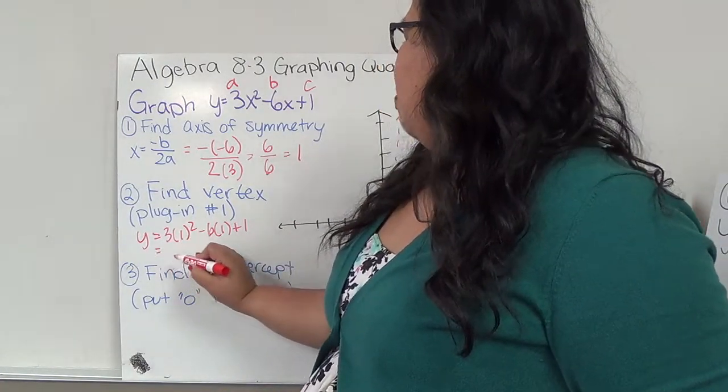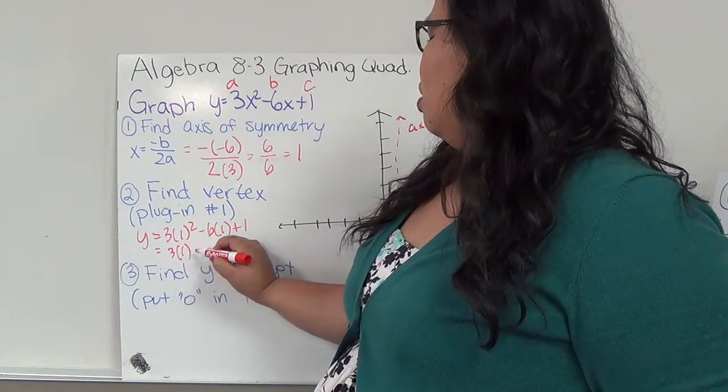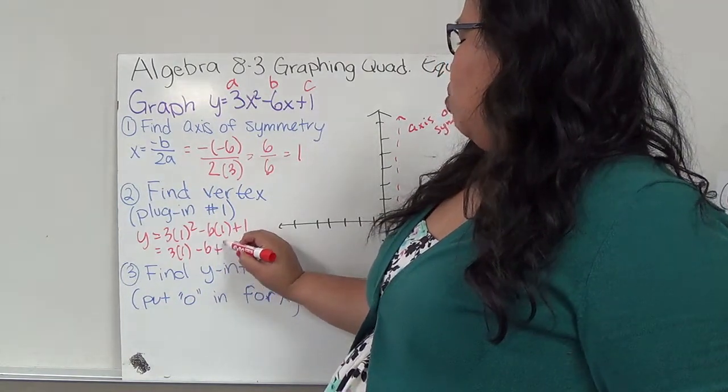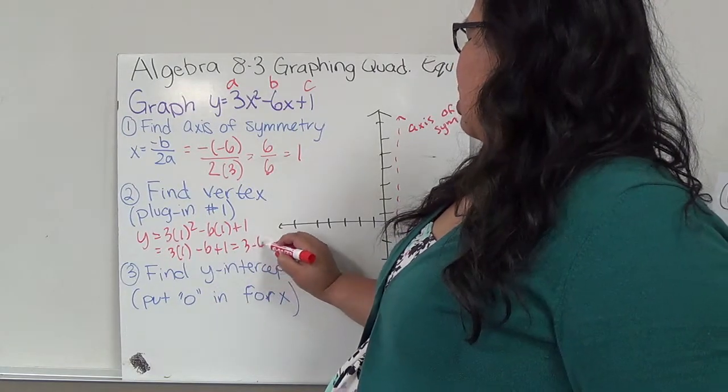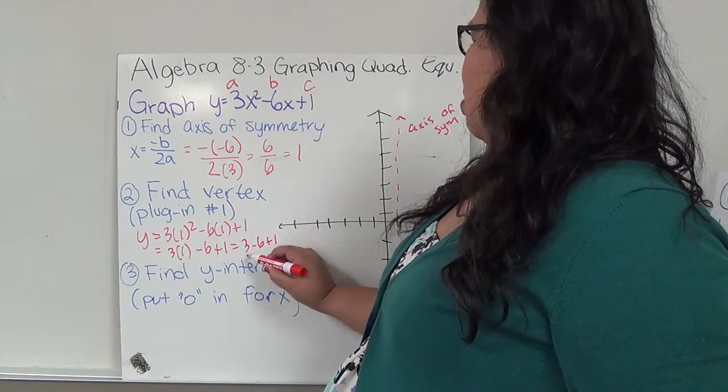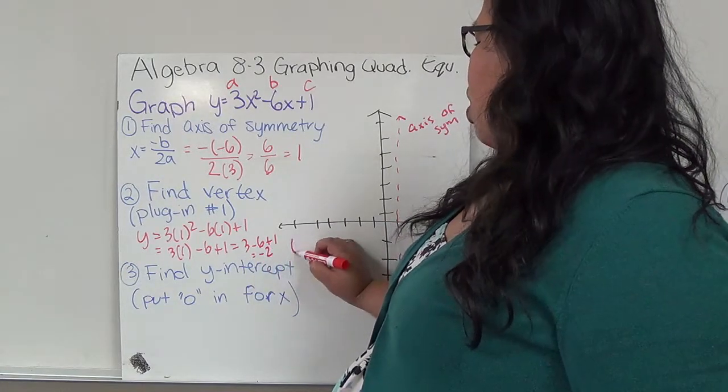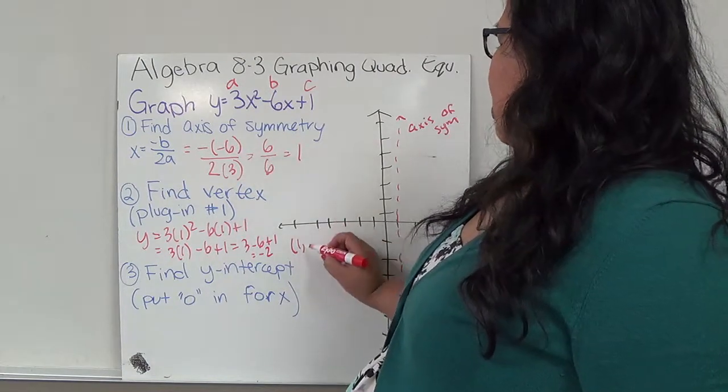Which would give me 3, 1, remember the squared only applies to that 1, so 3 times 1 minus 6 plus 1 gives me 3 minus 6 plus 1. 3 minus 6 is negative 3 plus 1, which would be negative 2. So my vertex, my X is 1, and my Y is negative 2.